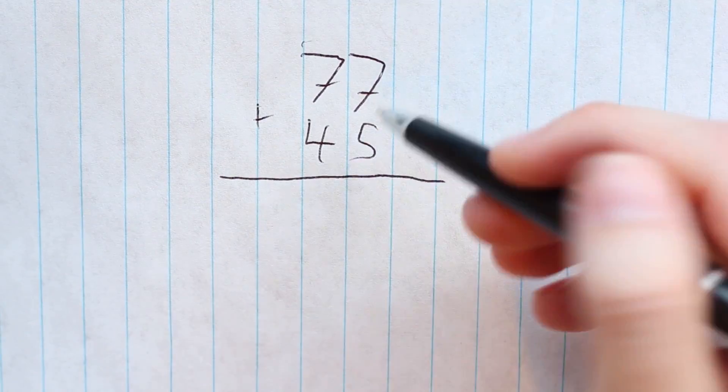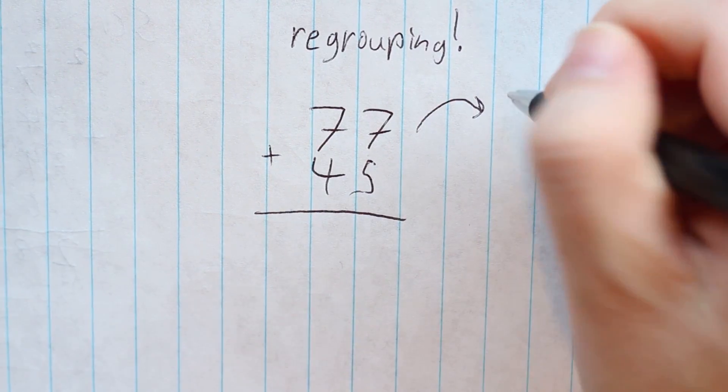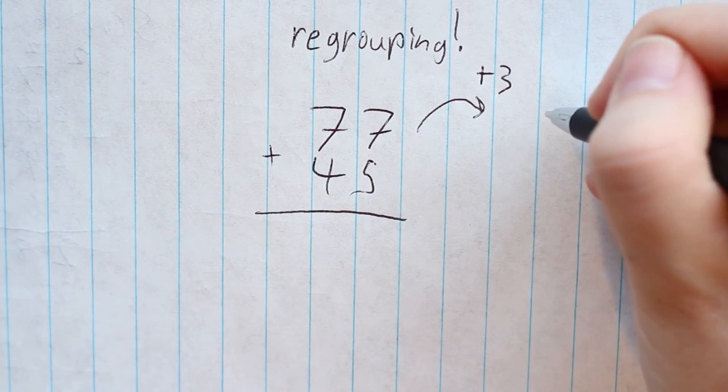You can easily invent your own methods too and put that carry digit wherever the hell you want. But my favorite technique is called regrouping, and you can do this in conjunction with any of the other algorithms.